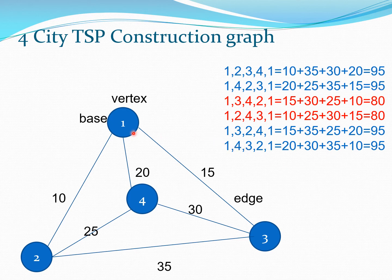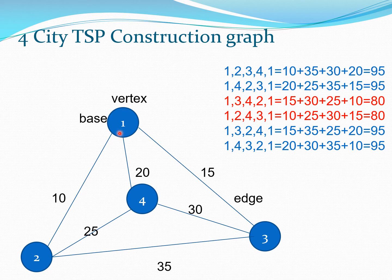The third case is the path 1 → 3 → 4 → 2 → 1. The distances are: 1 to 3 = 15, 3 to 4 = 30, 4 to 2 = 25, and 2 to 1 = 10. The total is 15 + 30 + 25 + 10 = 80.